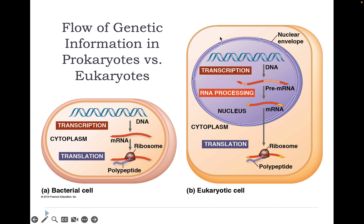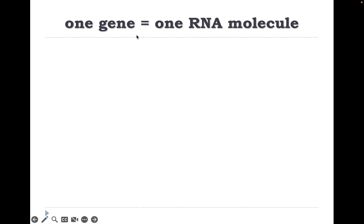In a eukaryotic cell, we have a nucleus, so there's one more level of complexity. DNA is transcribed into mRNA. The mRNA can exit the nucleus through a nuclear pore and travel to the ribosome where polypeptides are translated or produced. Our working hypothesis in biology today is that one gene codes for a single mRNA molecule.